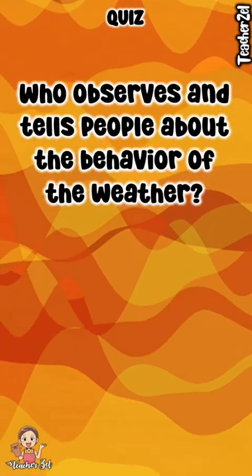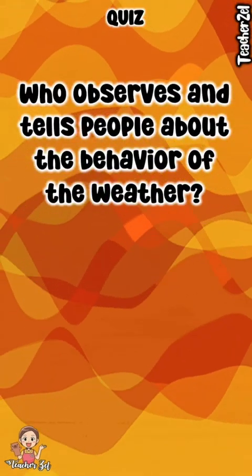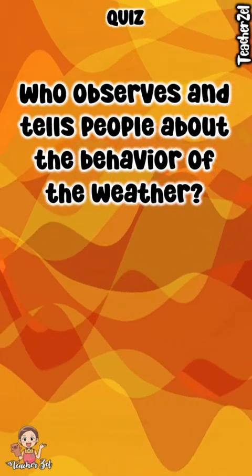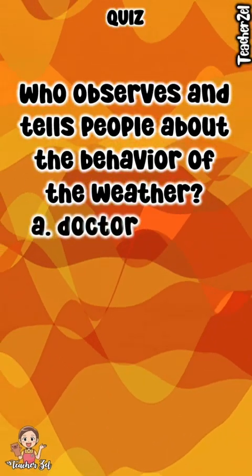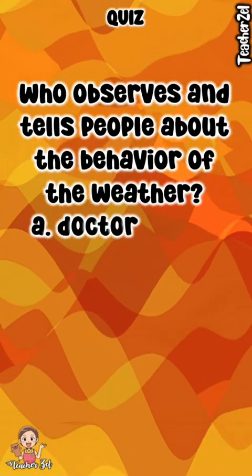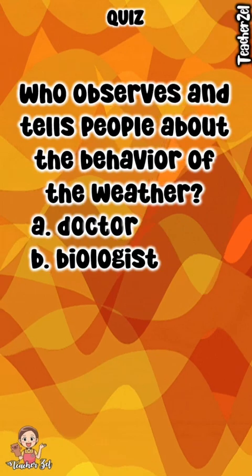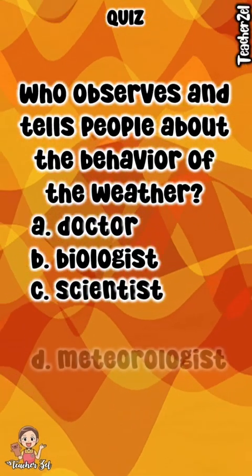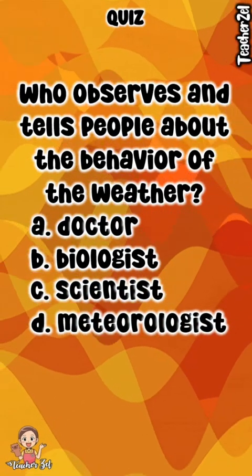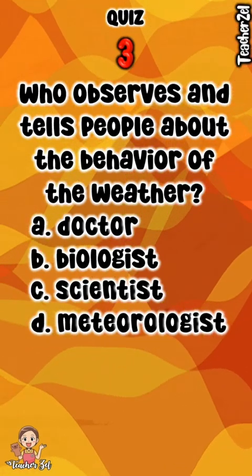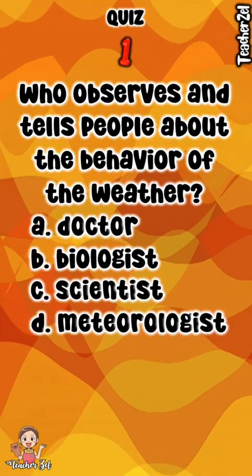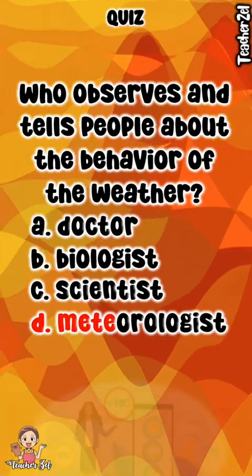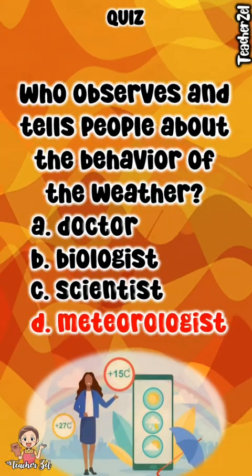Who observes and tells people about the behavior of the weather? A. Doctor. B. Biologist. C. Scientist. D. Meteorologist. The answer is D. Meteorologist.